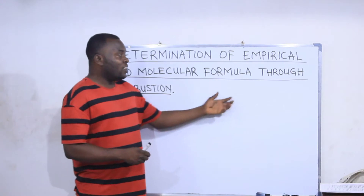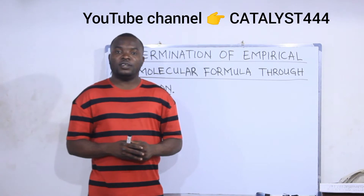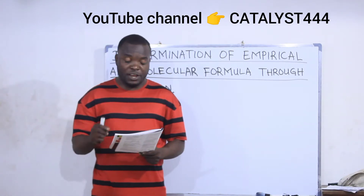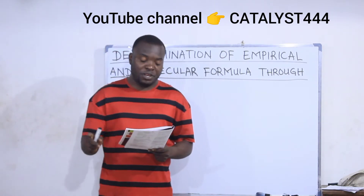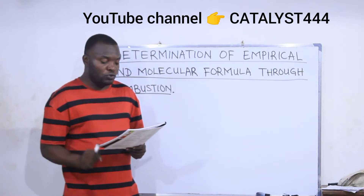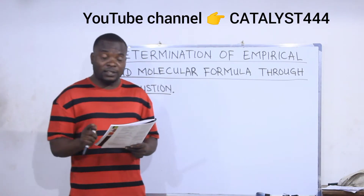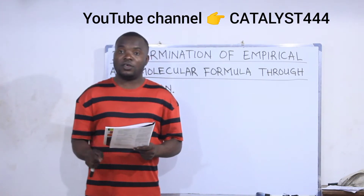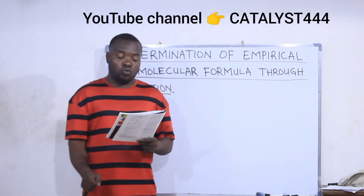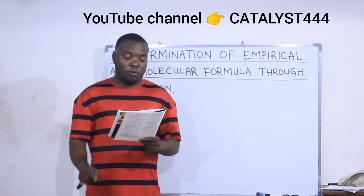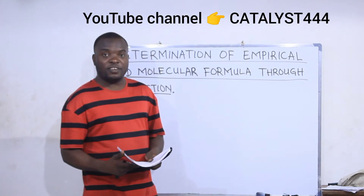Let's see how to determine empirical formula through combustion. A sample of an organic compound weighing 9.67 mg produced 26.53 mg of CO2 and 21.56 mg of water. The question asks us to calculate the percentage composition of carbon and hydrogen present in the sample.